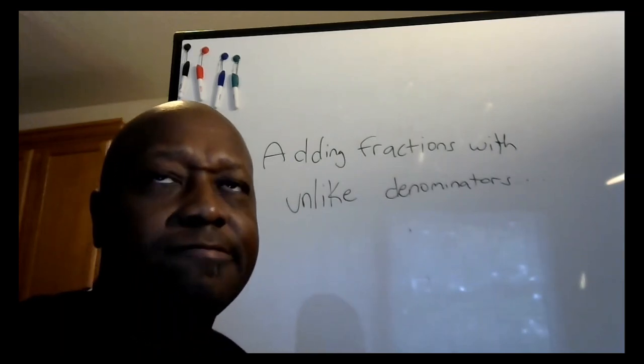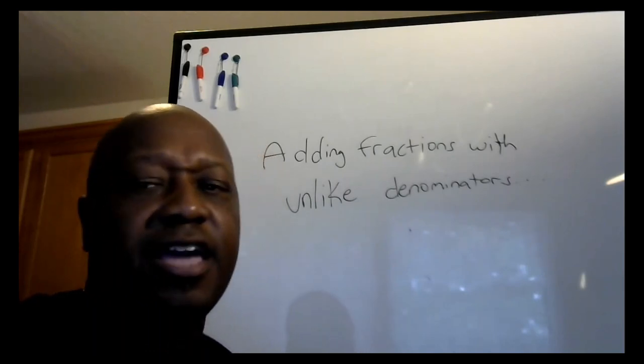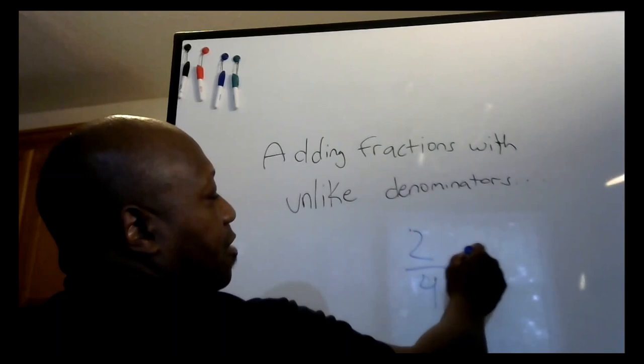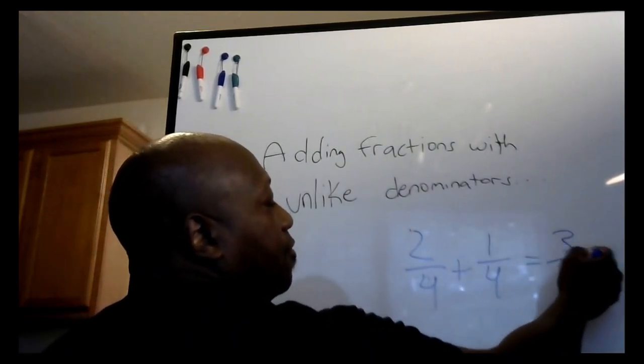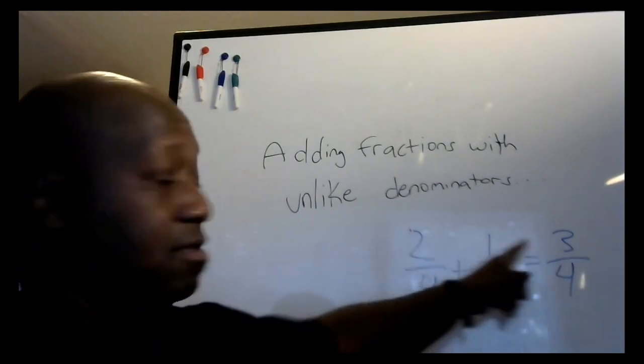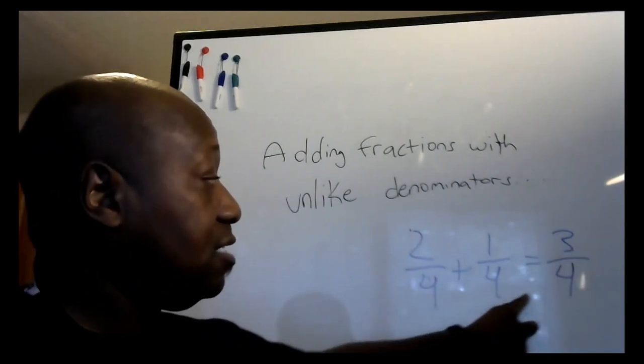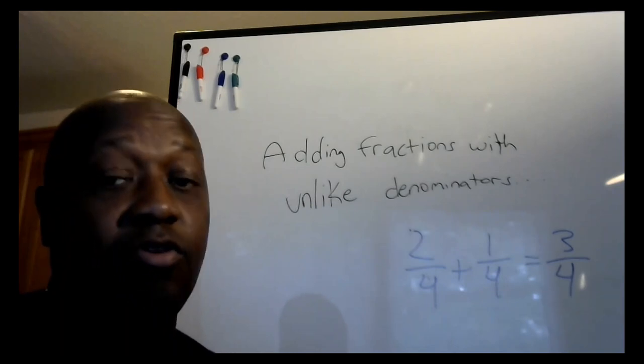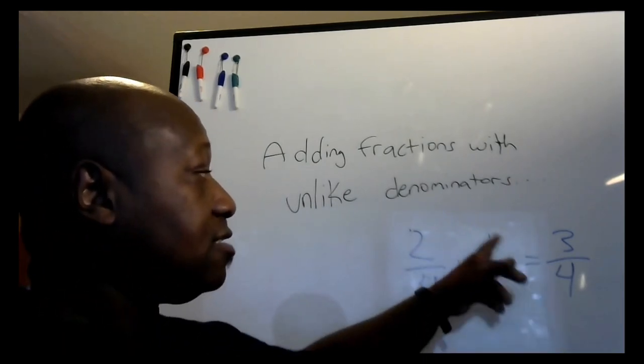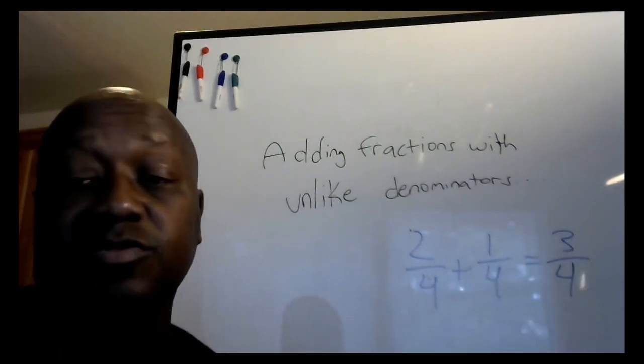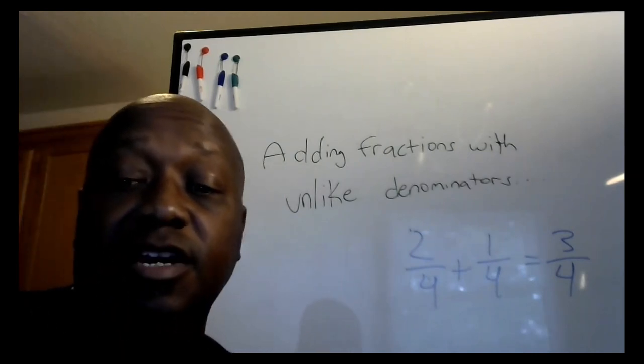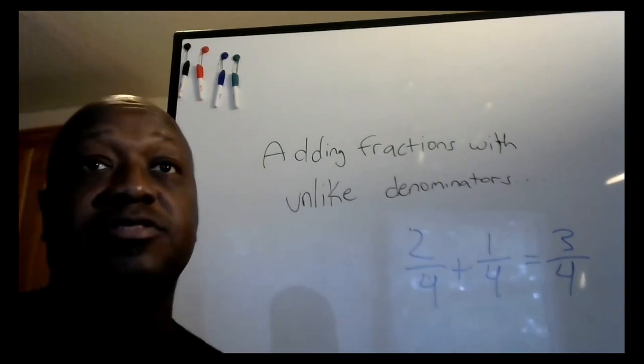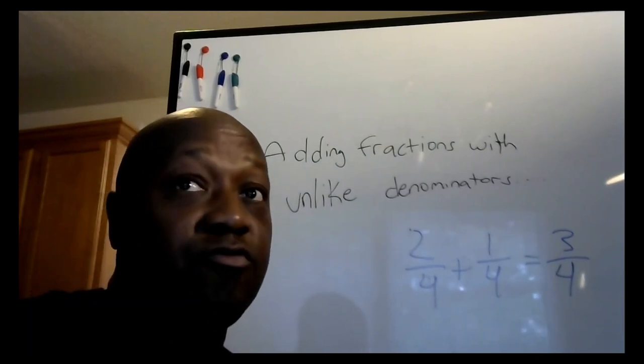If only the parts change, then two-fourths added to one-fourth would equal three-fourths. Again, the only thing that changed was the parts. The whole did not change. The denominator is the same—still whole pizza. But one person had two slices, another person had one slice, so now you have three slices eaten out of four. But if that denominator was different, now we're dealing with two different types of groupings.